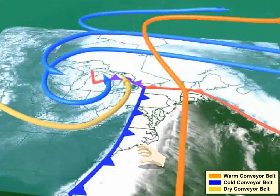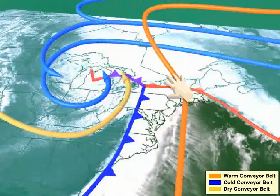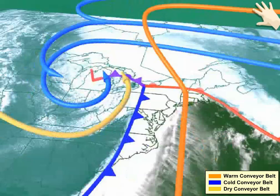The western edge of the warm conveyor belt gets drawn a bit westward by the upper-level disturbance that helps spur the low pressure system, but as it rises to altitudes near 30,000 feet, it usually encounters high-altitude winds from the west, and in response, it turns eastward.